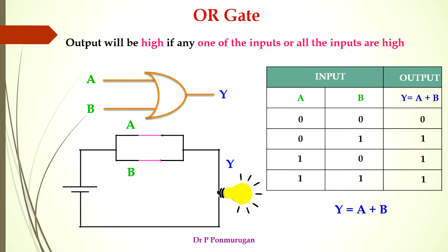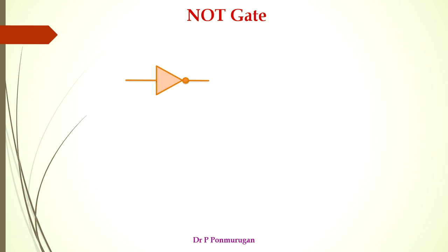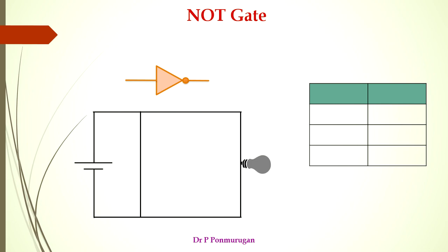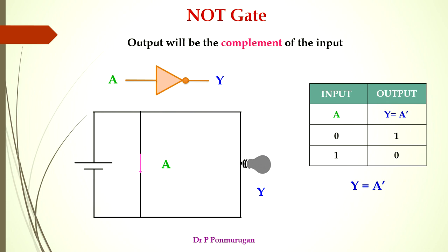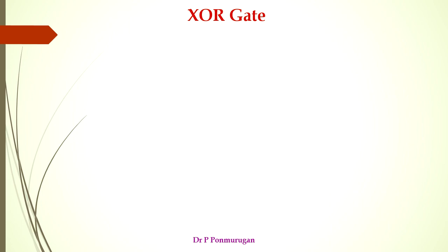Next is the NOT gate. This is the symbol of the NOT gate — it has only one input. The circuit explains the behavior of NOT gate. The input is A and the output is Y. If A equal to 0, the switch is open and the output will be 1 because the current will flow in the alternate path. If the switch is closed it will be short circuited so the output will be 0. The equation is Y = Ā. The NOT gate: the output will be the complement of the input.